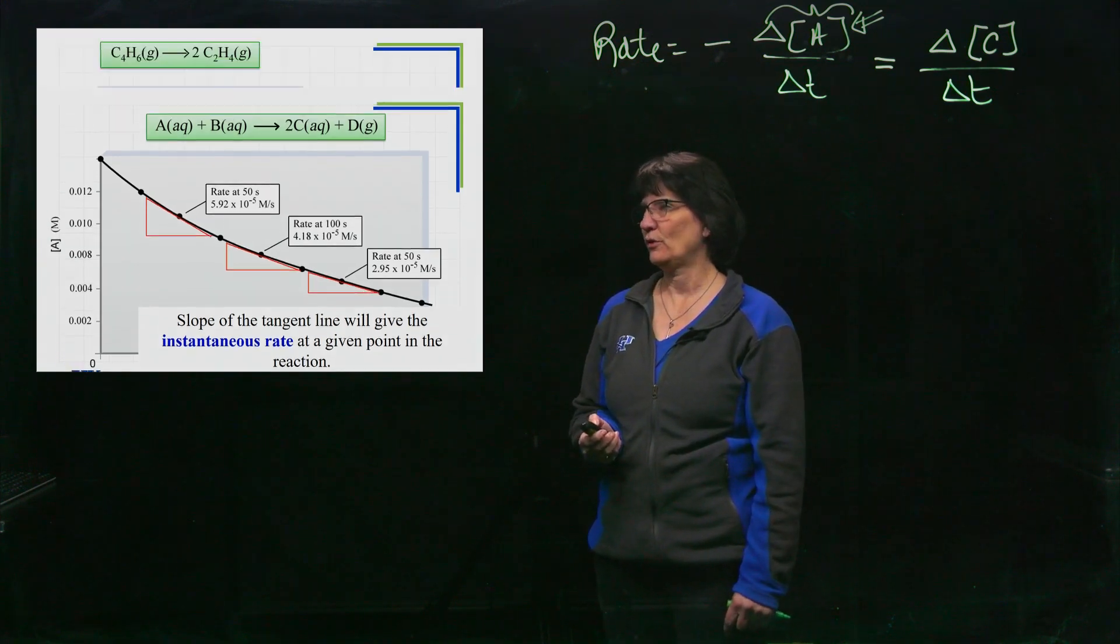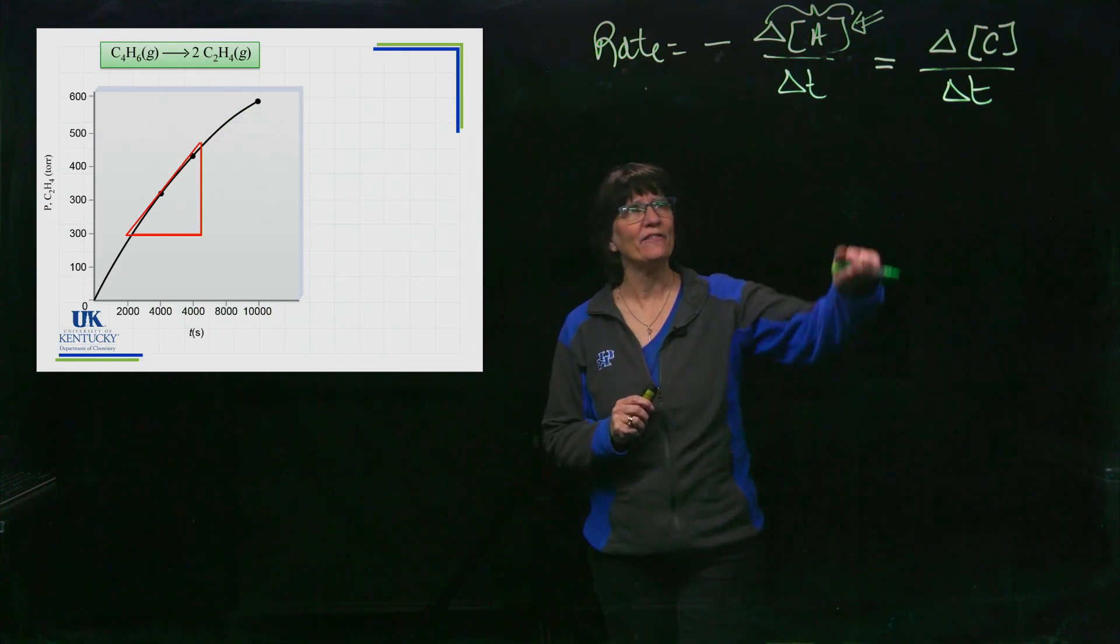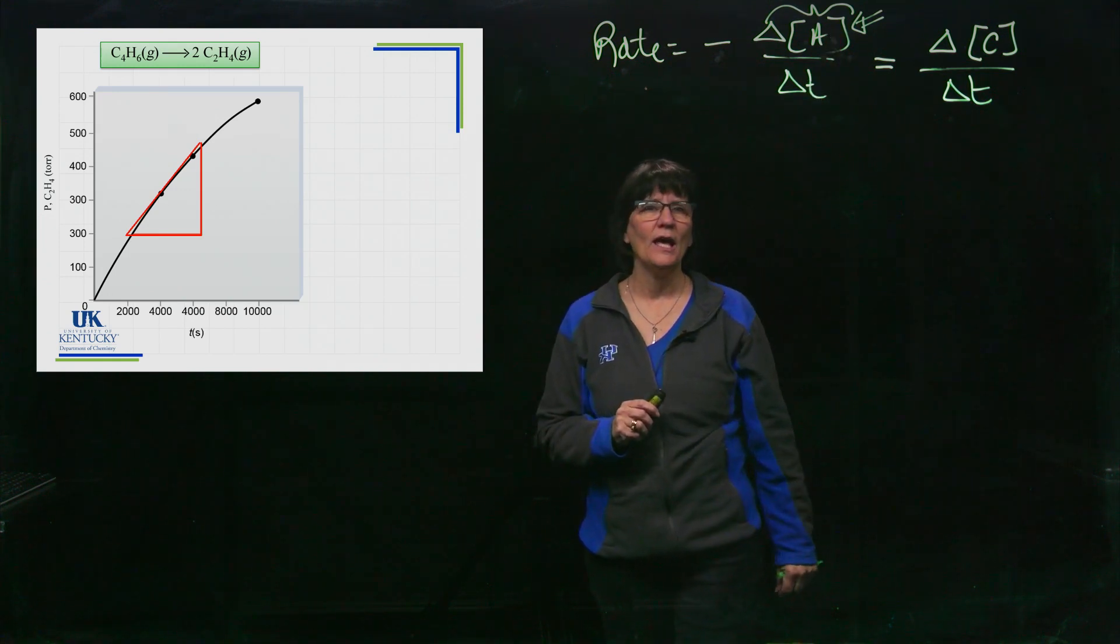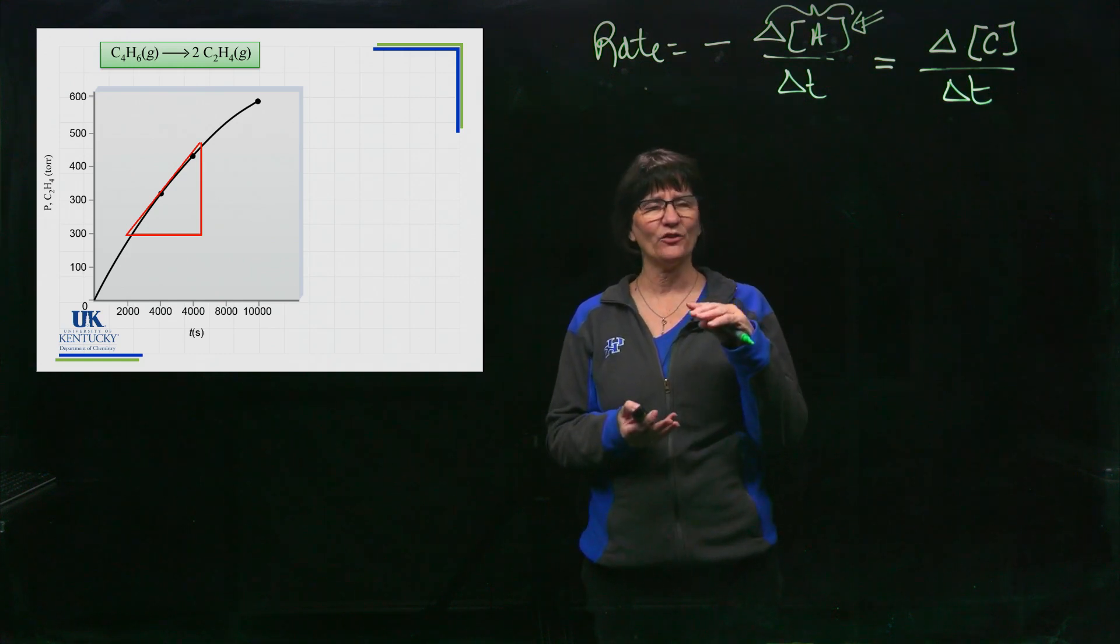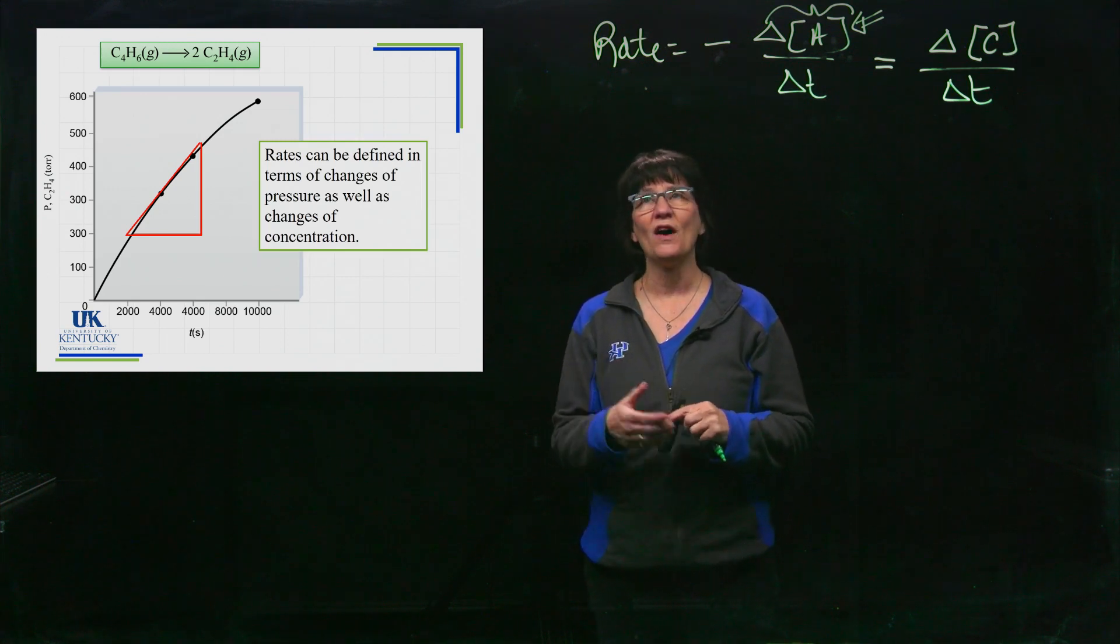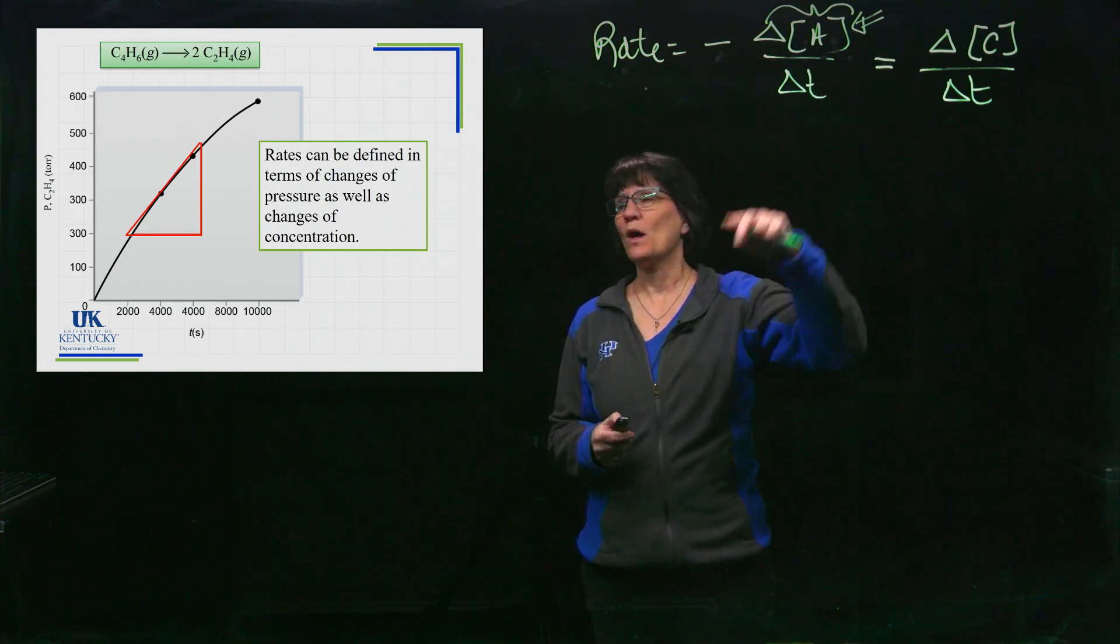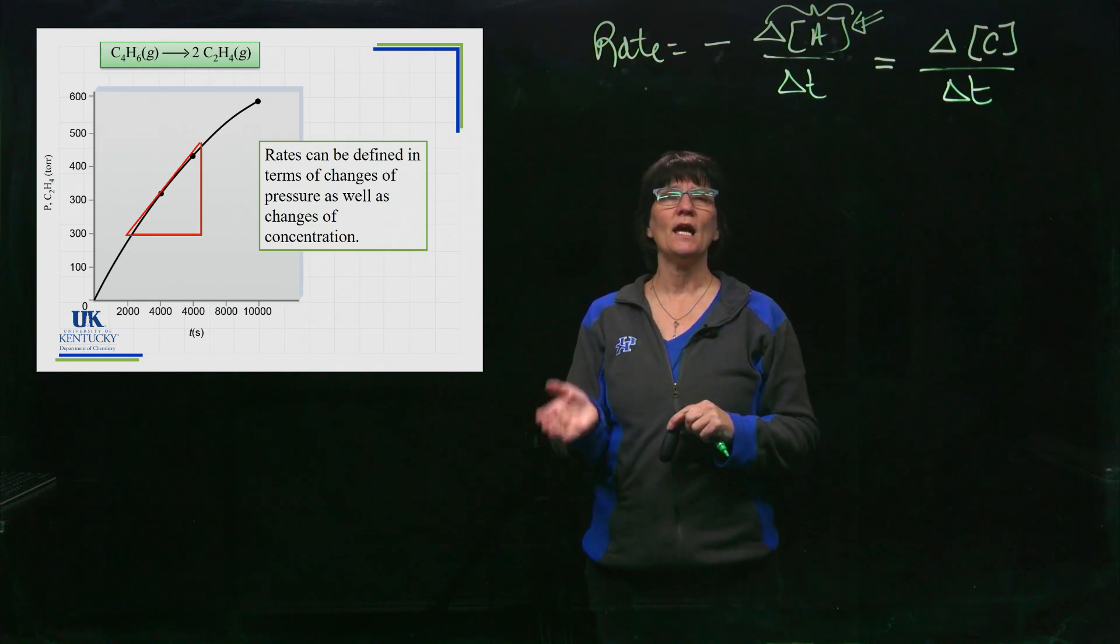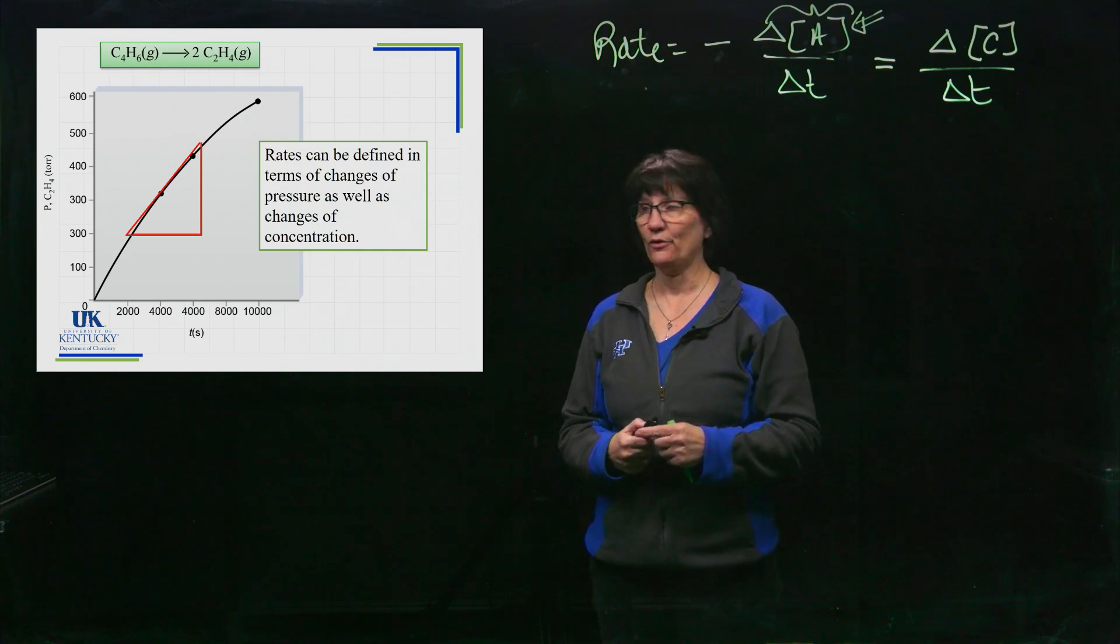Now here is a graph just to let you know that you don't always have to monitor it in change of concentration. If you've got gases, it's easy to monitor the pressure change of a gas. If you're keeping a cylinder the right size, you can measure pressure changes as time goes by. So you can define the rate in terms of changes in pressure just as well as you can in changes in concentration. When you use PV equals NRT, pressure and molarity are proportional to each other, so you can make those same kind of measurements.